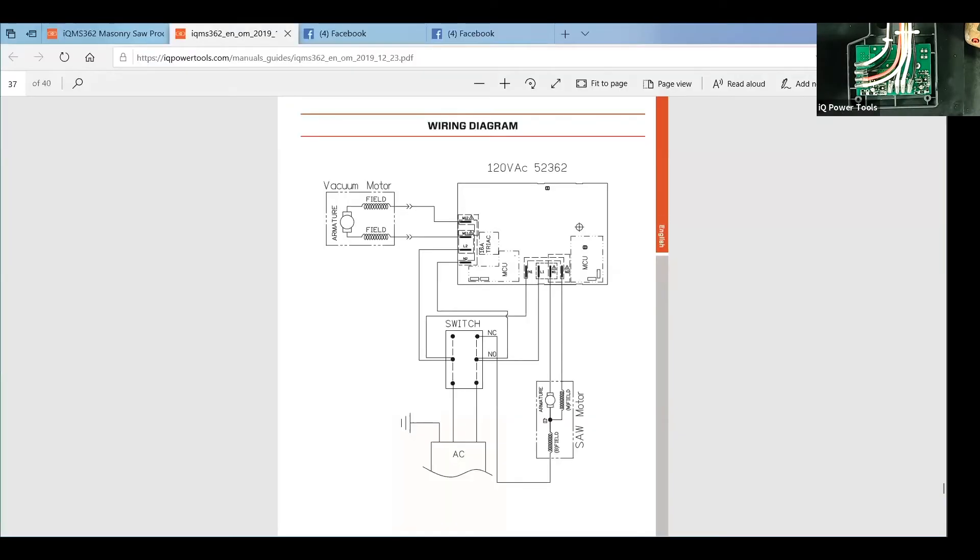So look, you see the wiring diagram is pretty straightforward. From the switch to the PCB inputs, L2, L5, I believe, and then you see M1 and M2 for the output going to the vacuum and saw motor fields. And again, the 362, 360 shared the same PCB. And then the 244, even though it's not the same, it's very similar in its layout.